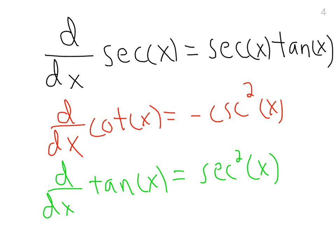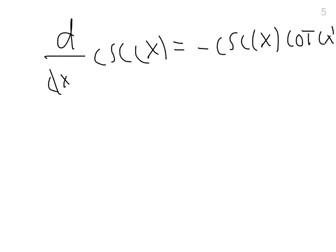And then finally, the derivative of cosecant of x is equal to negative cosecant of x times cotangent of x. And you can see how that parallels the derivative of secant.